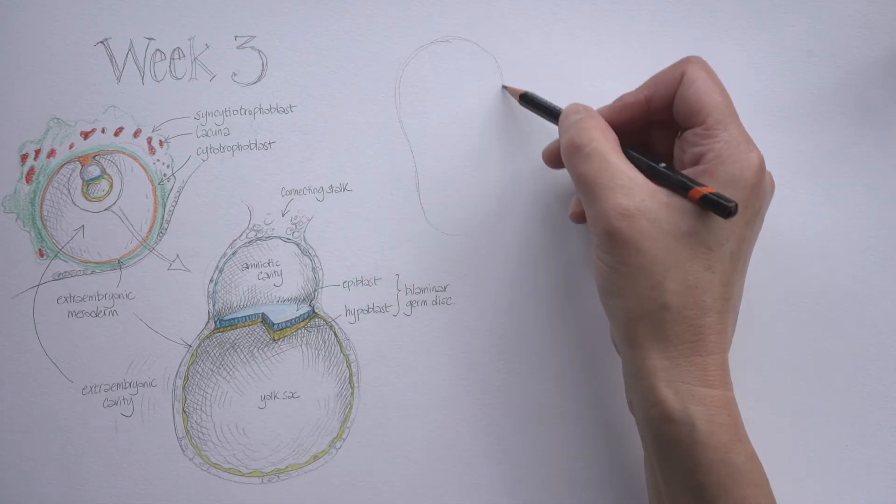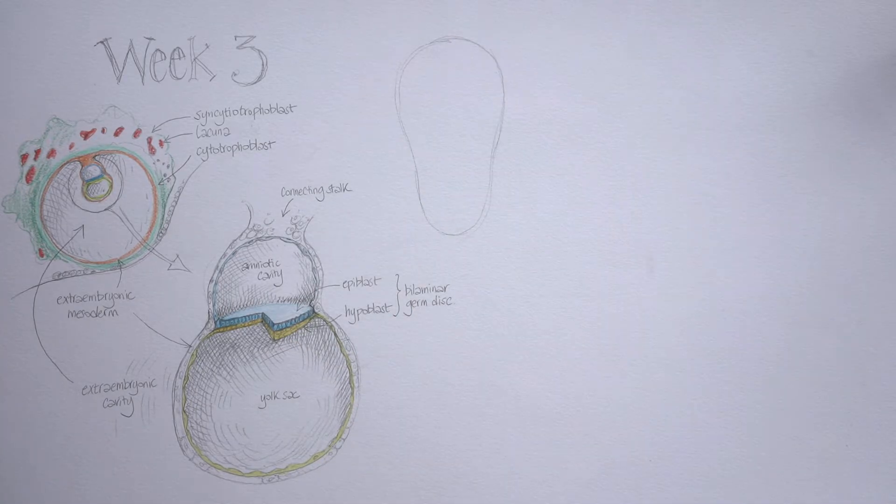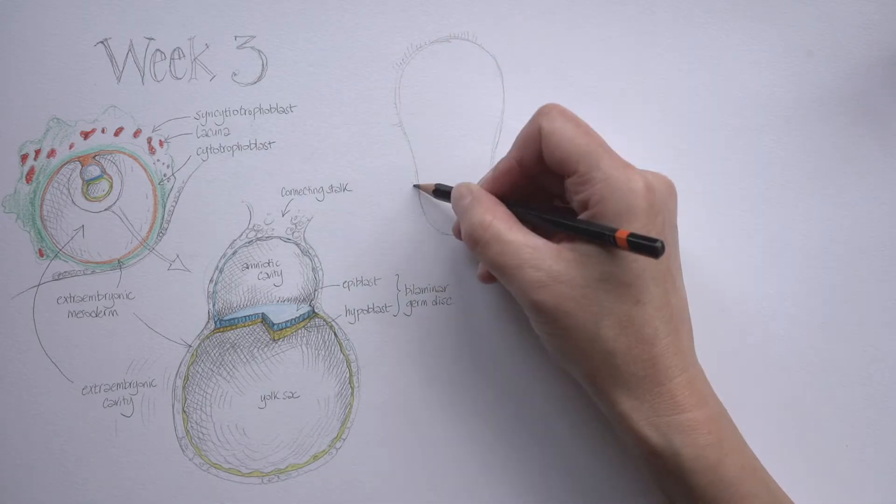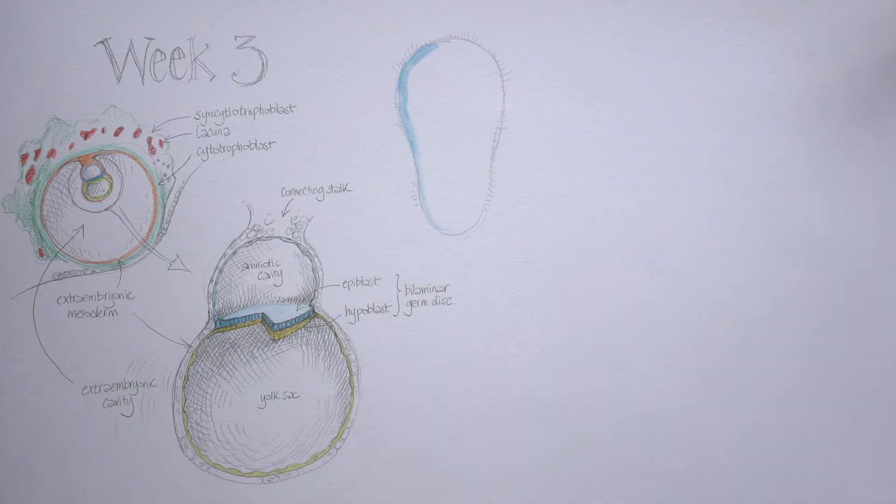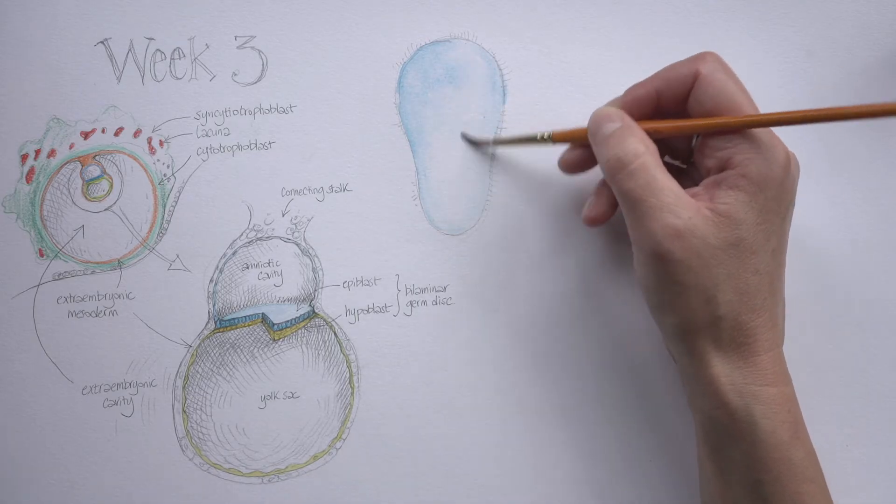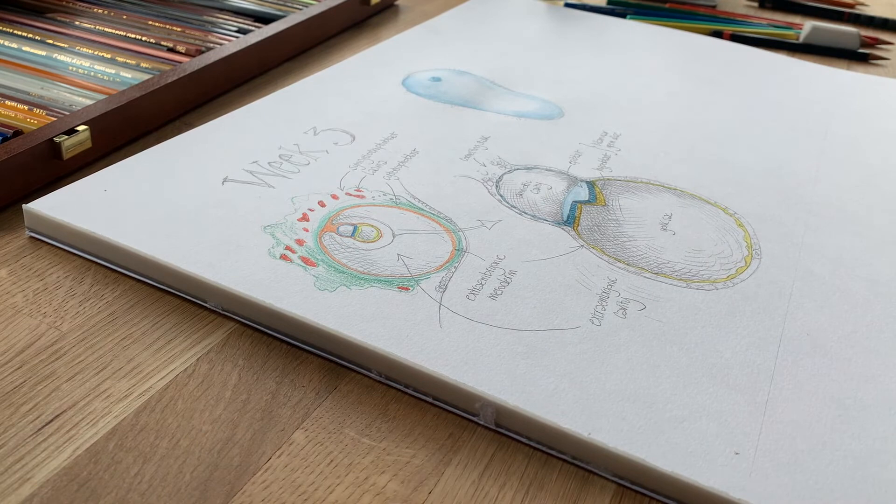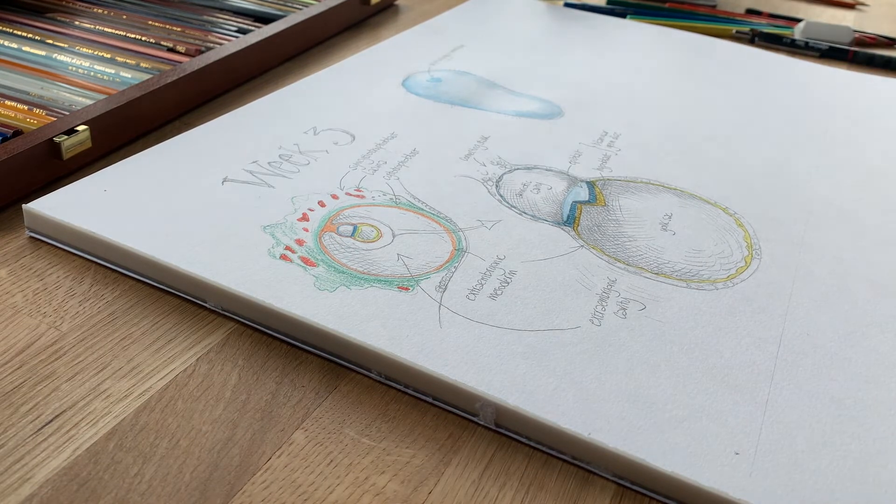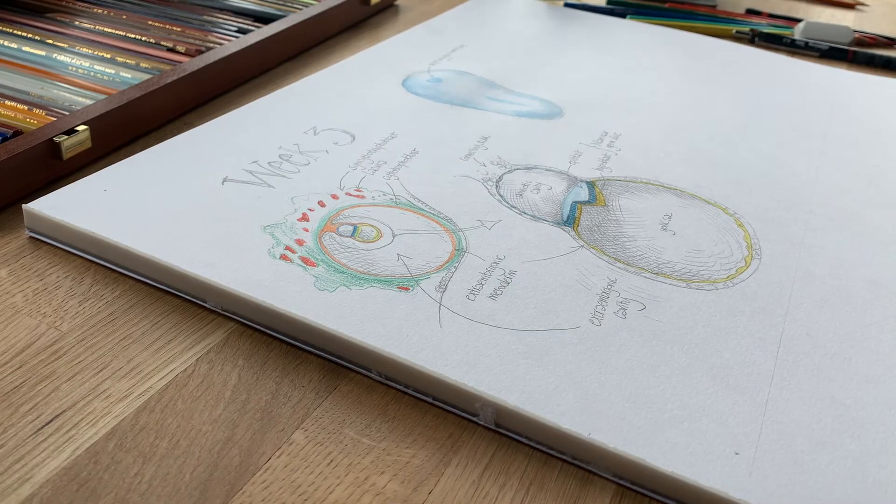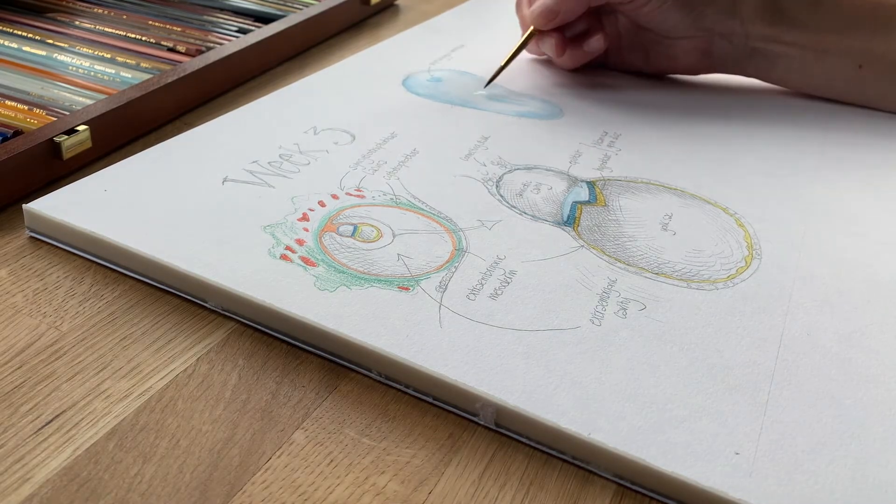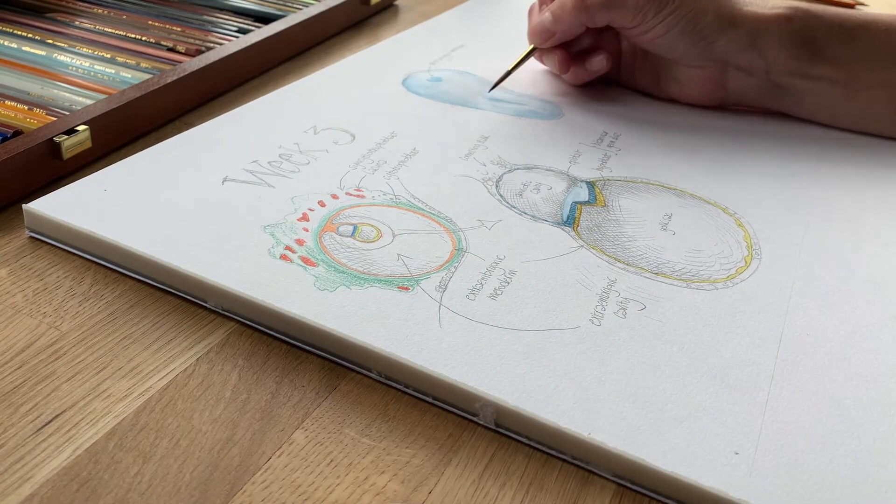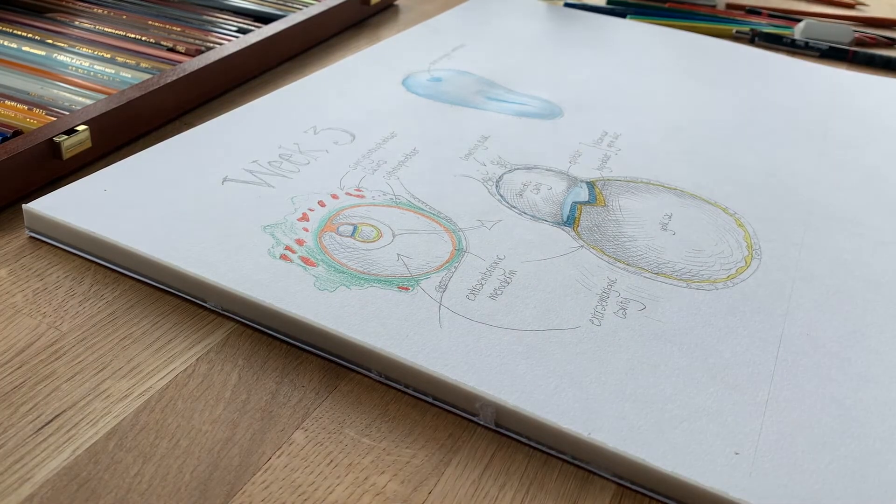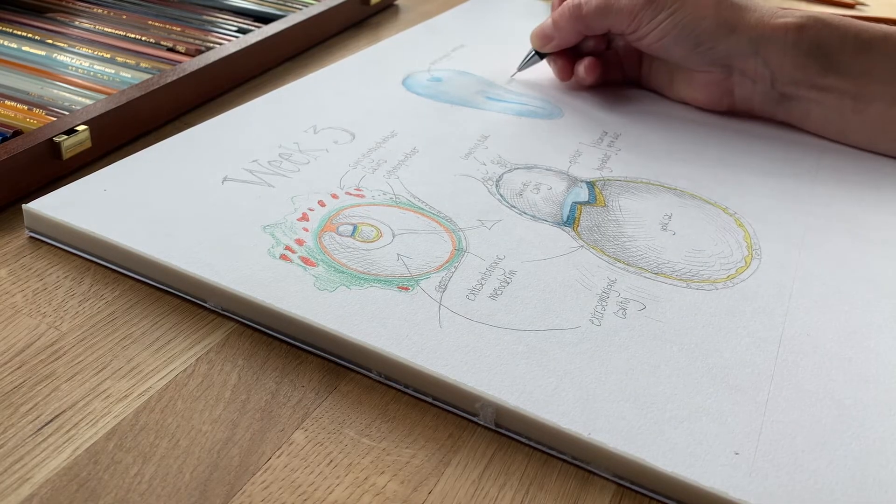But now we're going to look at what's happening in this third week, a very dynamic process where we transform the two-layered germ disc into a three-layered germ disc. Imagine you're floating in the amniotic cavity and you're looking down on the surface of the epiblast, which I'm painting this lovely pale blue. Up towards the head end, the cranial end of this germ disc, we can see a depression, and then down towards the tail end, the caudal end, we can see a groove starting to form. First of all, a shallow depression, and then that becomes deeper and deeper until it becomes quite a distinct cleft.